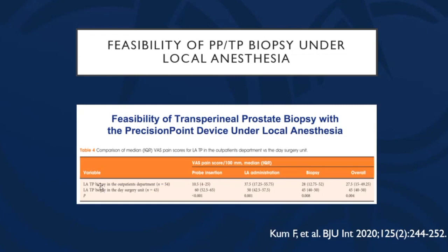When they transitioned to the outpatient setting — just like at Northwestern — the pain scores changed dramatically: probe insertion dropped to 1, LA administration 3.7, biopsy pain score 2.8, overall pain score 2.7, which is comparable to transrectal.